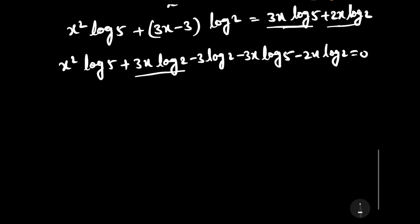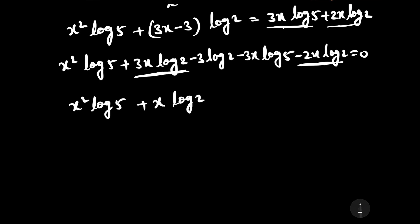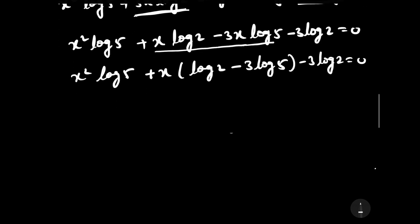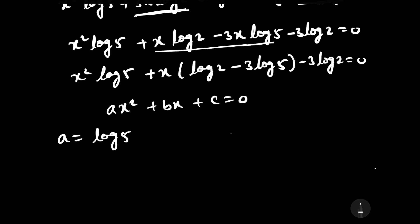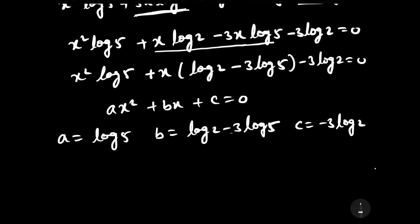Combining like terms — subtracting 2x log 2 from 3x log 2 gives x log 2 — so the equation becomes: x squared log 5 plus x log 2 minus 3x log 5 minus 3 log 2 equals 0. Comparing with the standard quadratic equation ax squared plus bx plus c equals 0, we get: a equals log 5, b equals log 2 minus 3 log 5, and c equals minus 3 log 2.